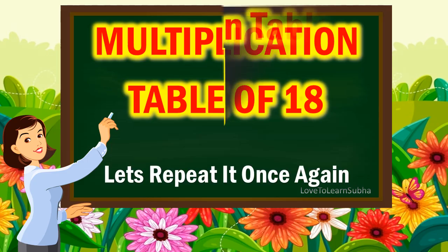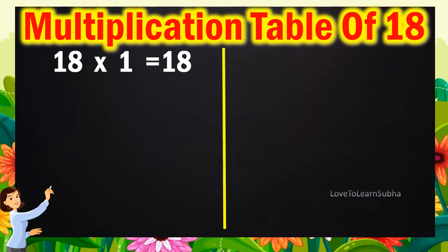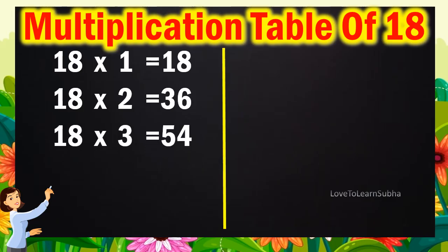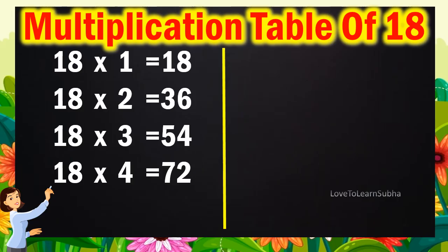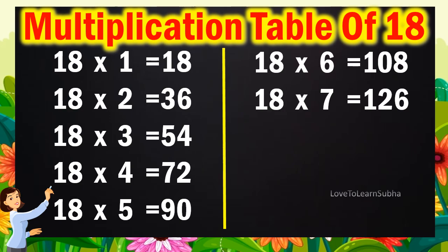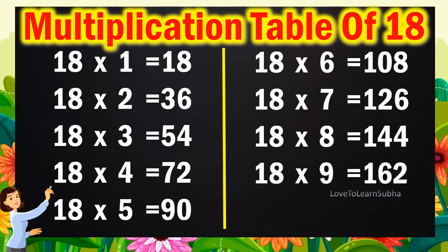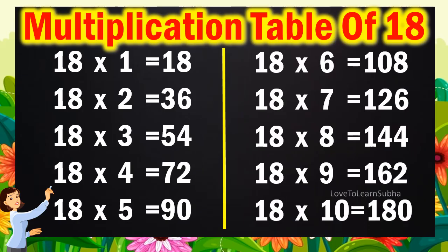18 1's are 18, 18 2's are 36, 18 3's are 54, 18 4's are 72, 18 5's are 90, 18 6's are 108, 18 7's are 126, 18 8's are 144, 18 9's are 162, 18 10's are 180.